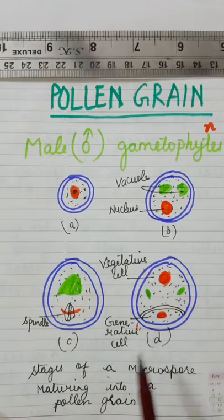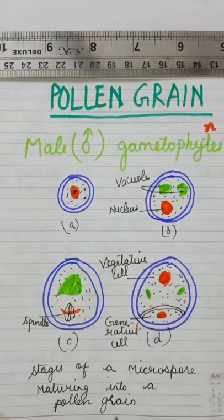Now these are the stages of a microspore maturing into a pollen grain. Let us discuss these stages one by one.